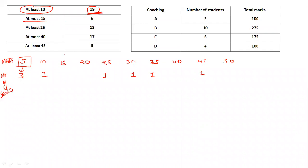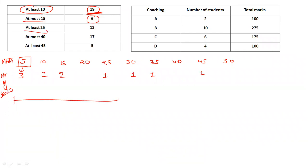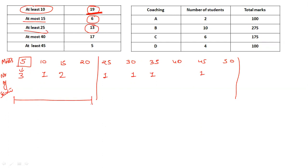'At most fifteen' means five and fifteen — total number of students here is six. We can see: three plus one plus two. 'At least twenty-five' means from twenty-five and above, and that total should be thirteen. So the remaining students here will be twenty-two minus thirteen, which is nine. So here we get three, since six is already done, leaving three for this slot.